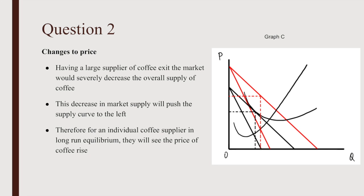We must also consider changes to price. Having a large supplier of coffee exit the market would severely decrease the overall supply of coffee. This decrease in market supply will push the supply curve to the left. Therefore, for an individual coffee supplier in long-run equilibrium, they will see their price of coffee rise. Thus, graph C is the correct answer to question two.